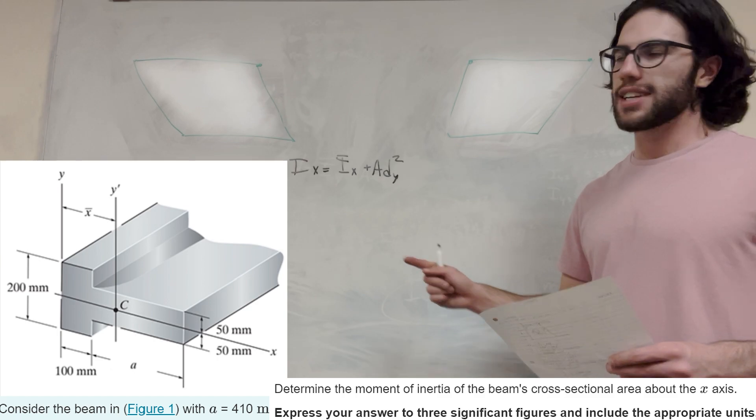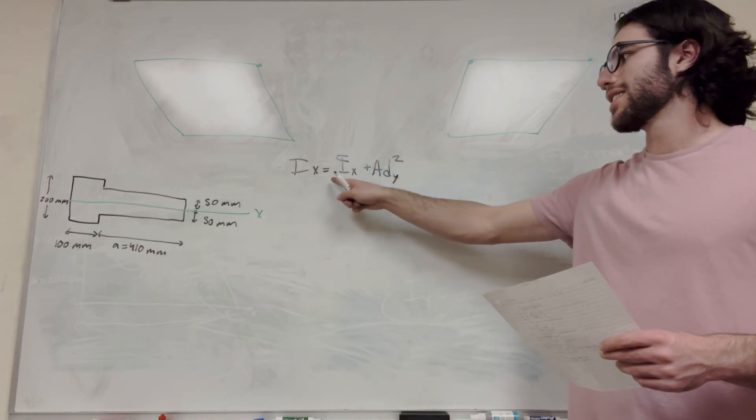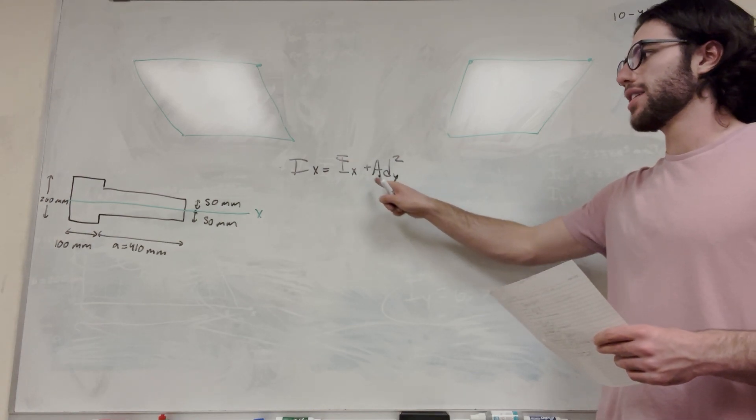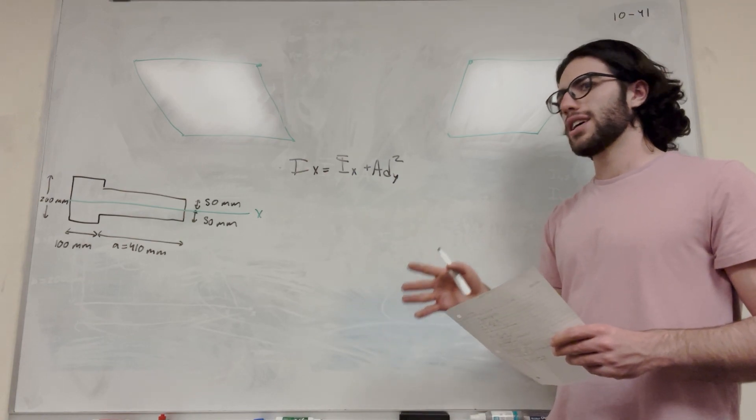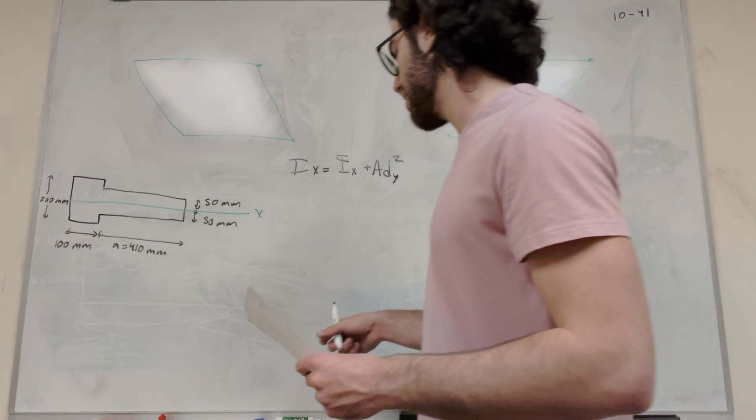When we're finding the moment of inertia on the x-axis, we're going to use this formula. The moment of inertia on the x-axis equals I bar around the x-axis plus the area times distance in the Y. I bar is different for any shape you choose and it's something you can find in the back of the book or on Google, so you don't need to memorize it.